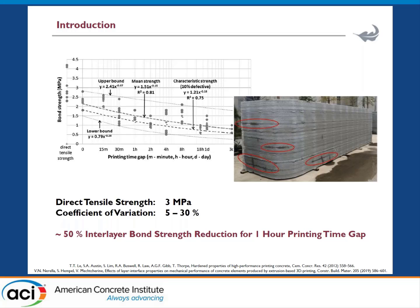This happens due to increased permeability between layers, which increases as a function of time between deposition of successive layers. Looking at the graph, the direct tensile strength for cast concrete is about 3 MPa. For printed samples tested in direct tension after a one-hour gap, bond strength drops to just 1.5 MPa — about a 50% reduction. This is a huge concern, as it can lead to localized failure and compromise structural integrity.